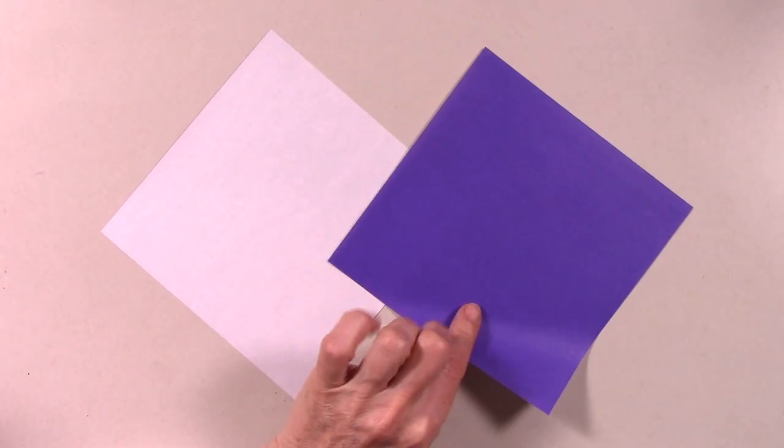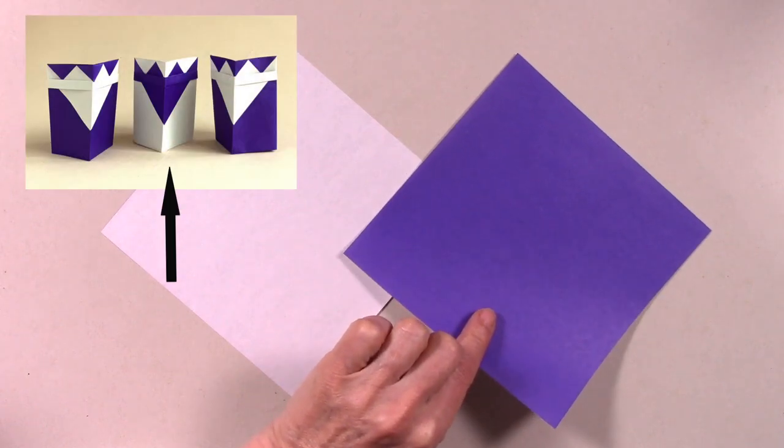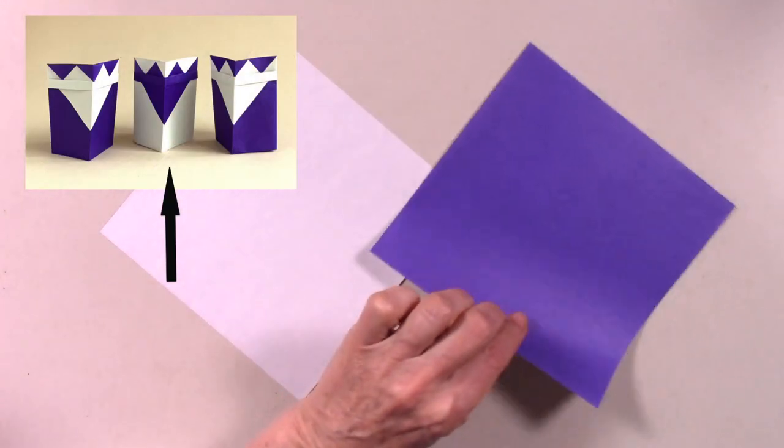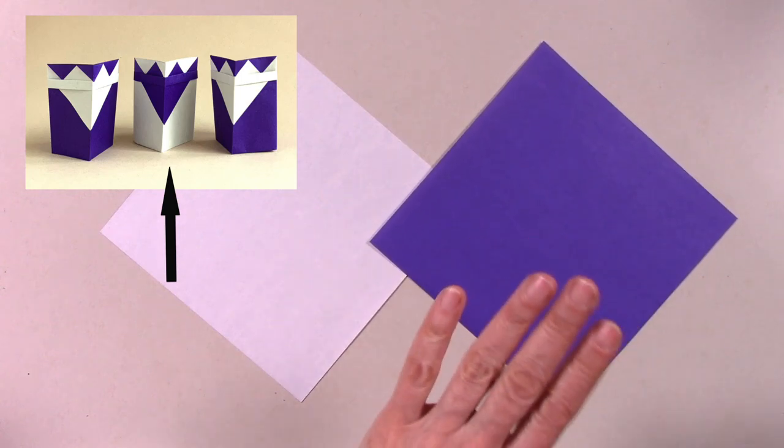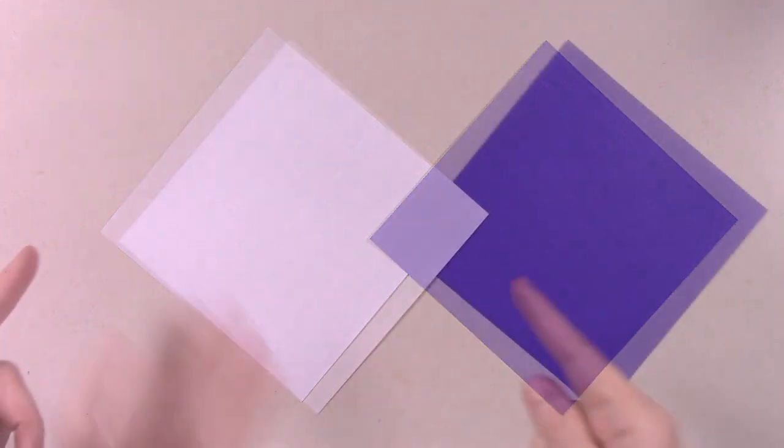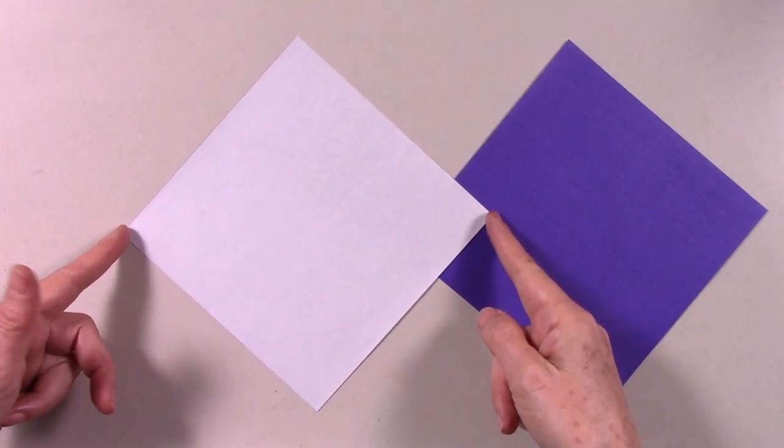To signify the king that is from Africa we are going to use the same paper but we begin with the color side facing up. This will be the color of the face and the beard. We fold in half corner to corner.